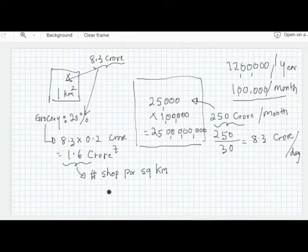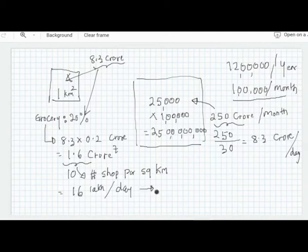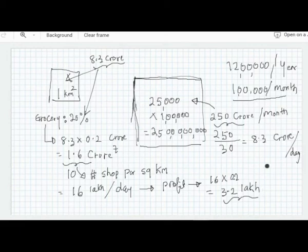How many grocery shops in one square kilometer? About five to ten—at least ten shops selling all this. So their revenue per day is 1.6 crore divided by ten. What is the rate of profit? Twenty percent. How much is the profit? 3.2 lakh per shop per day at twenty percent profit.